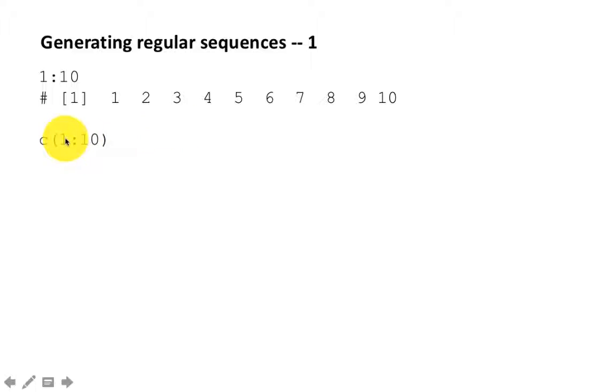You can do C(1:10), which is redundant because 1:10 itself generates a vector. So there's really no point in saying C(1:10), but it does the same thing.